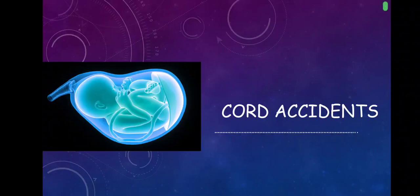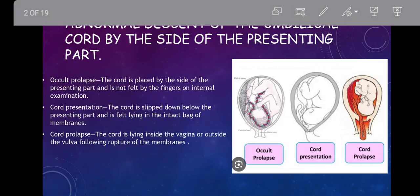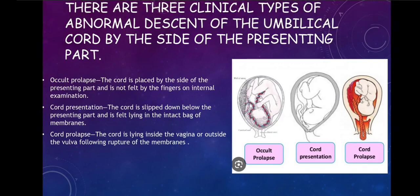Hello everyone. Today we will be discussing Cord Accidents. There are three clinical types of abnormal descent of the umbilical cord by the side of the presenting part. Cord Accidents usually consist of three things: the first one is occult prolapse, cord presentation, and cord prolapse.